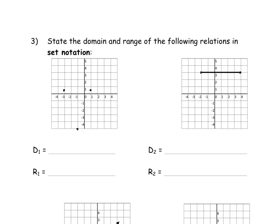Now we'll look at graphs specifically. Instead of ordered pairs, we have actual plotted points. The points are: (-3, ½), (1, ½), and (-1, -5). The domain is all the possible X values: negative 3, negative 1, and 1. The range is all the possible Y values: notice Y equals ½ is repeated, so you only state it once — giving us negative 5 and ½.